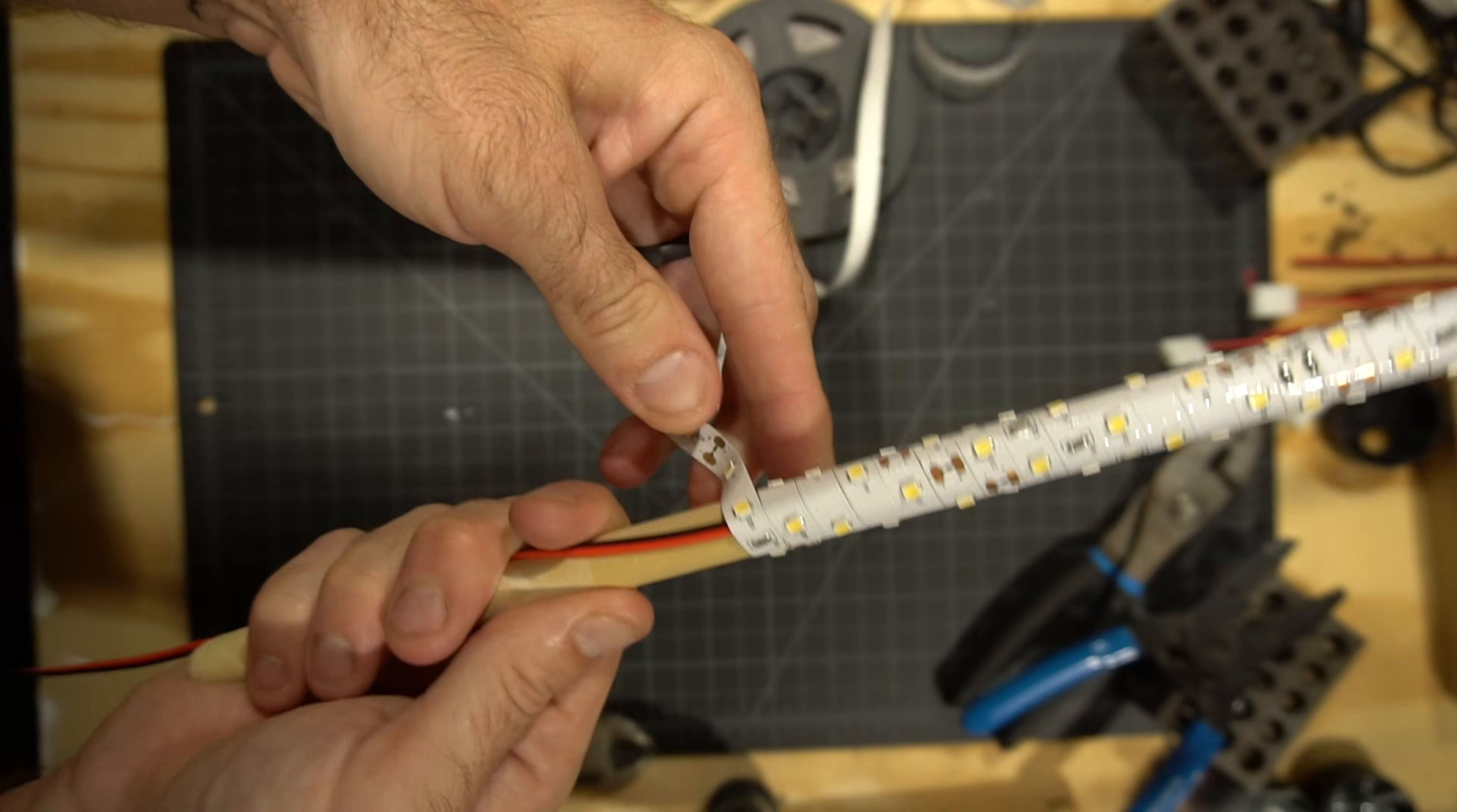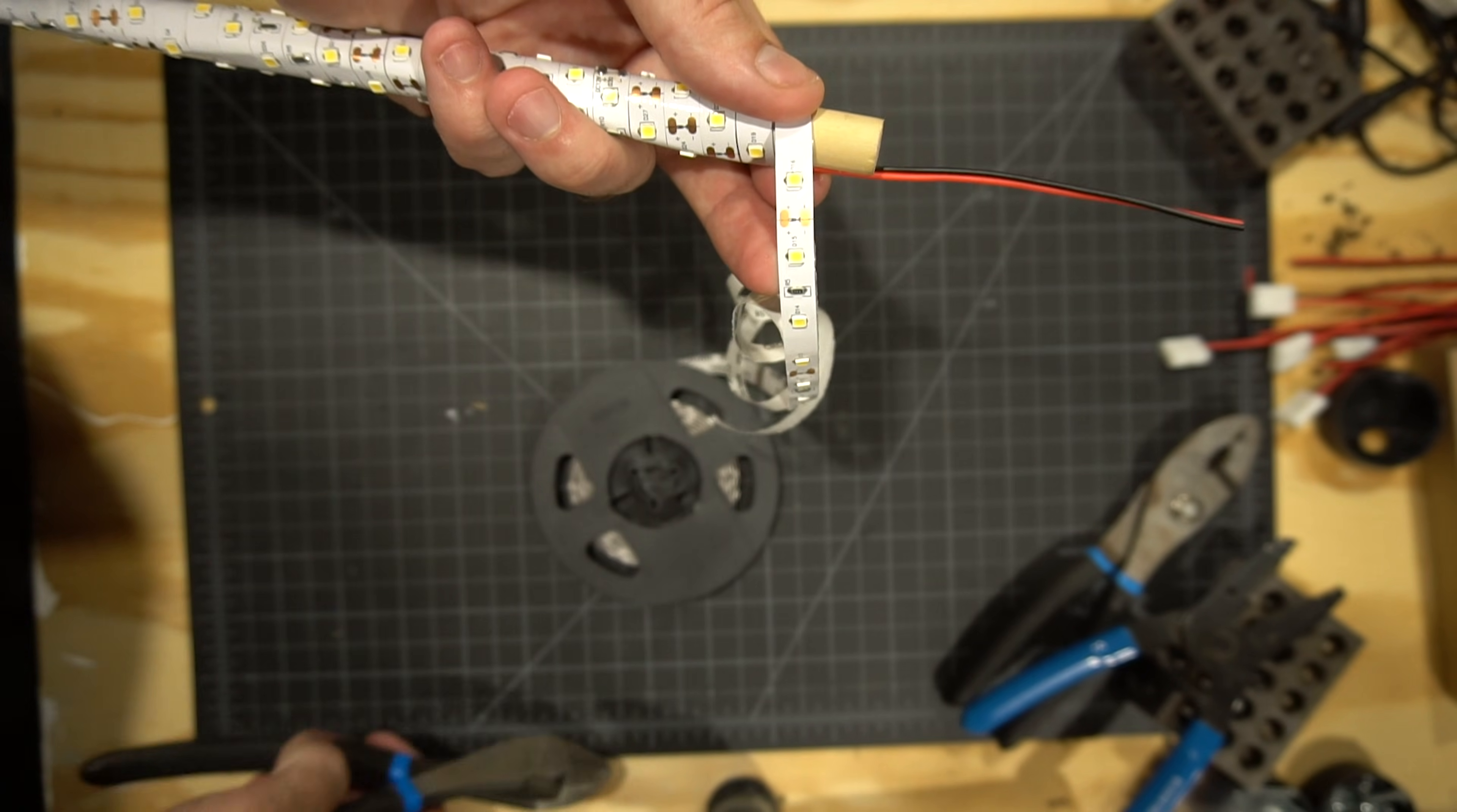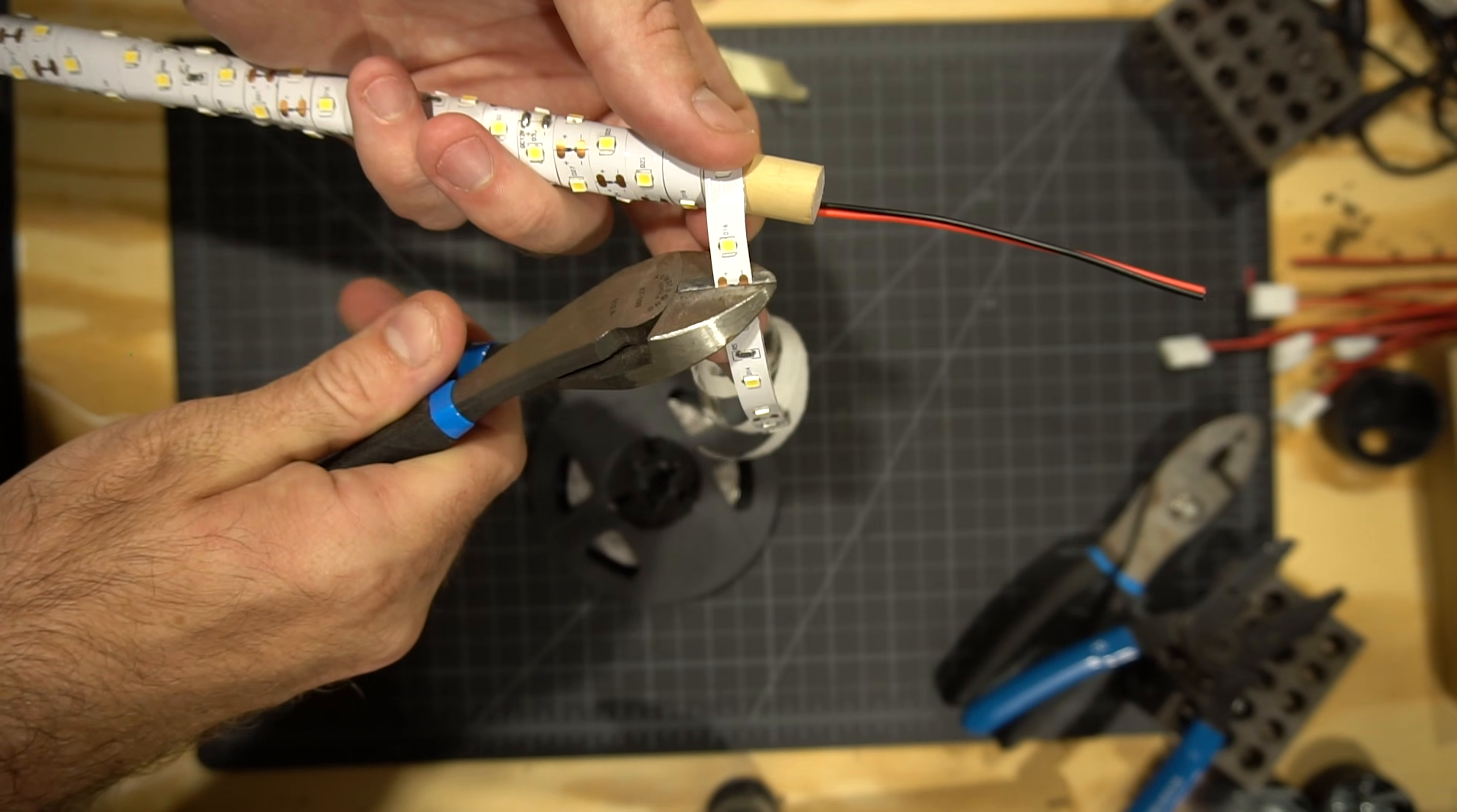When you get to the other end, be sure to leave another half inch or so of the dowel out. If you need to cut your light strip, be sure to do so along the lines of one of the predetermined cut areas. Mine have a little cut icon and then a couple copper areas where I could cut them out. We need these to solder the wires to, so just cut them carefully with a wire cutter.